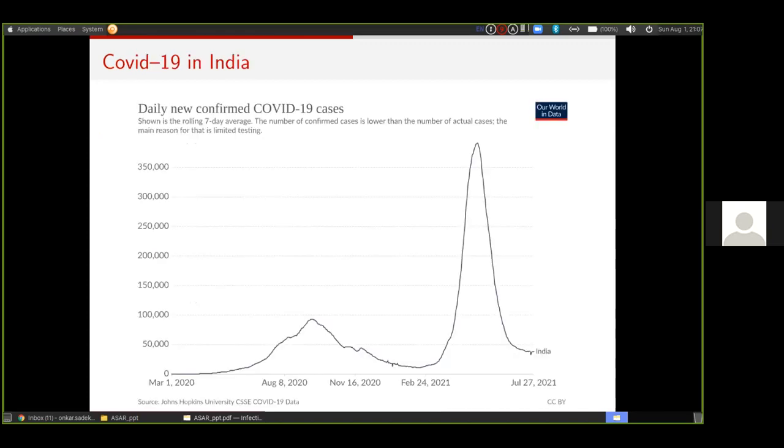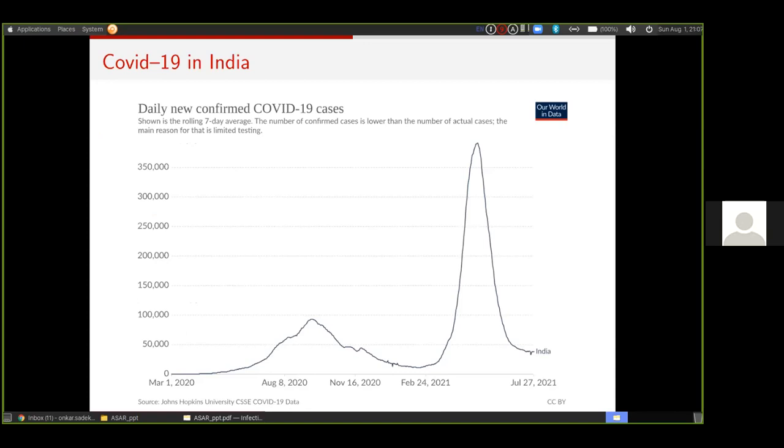As everyone is aware, in the past maybe one year and a half, COVID-19 pandemic has been present in all our lives and has disrupted daily life to a large extent. This is just a snapshot of the number of confirmed cases in India, and we can clearly see the two peaks here which have gotten a lot of publicity in the past few months. It was devastating at multiple levels, not just because of the number of people who unfortunately died because of it, but also the daily lives of people got affected to a large extent.